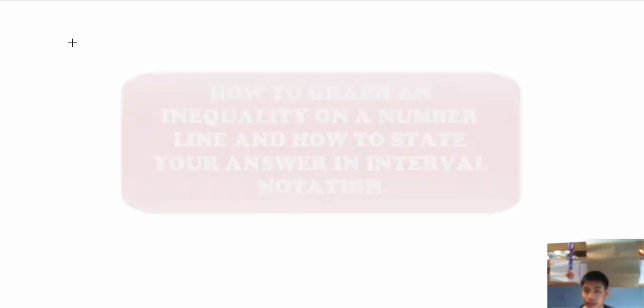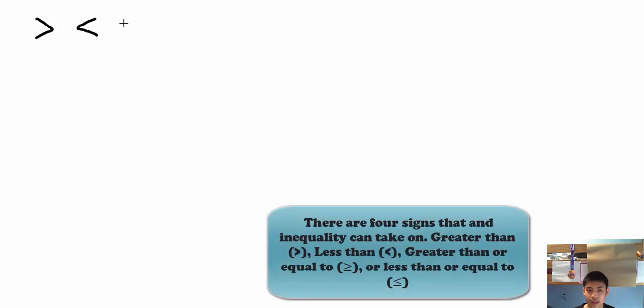Now to understand inequalities we have to know the four signs an inequality can be in. The first one is greater than, we also have less than, we also have greater than or equal to and less than or equal to.